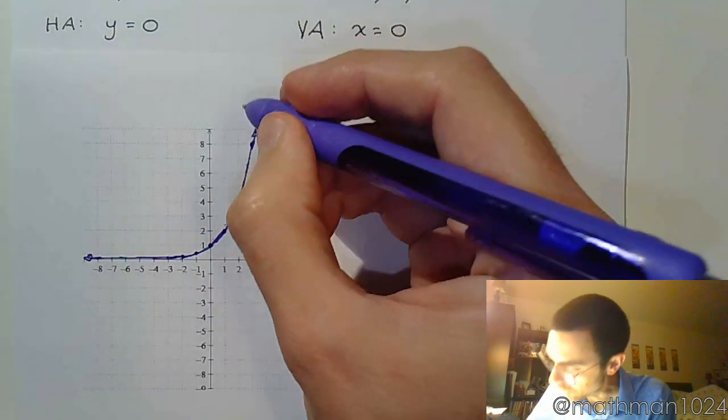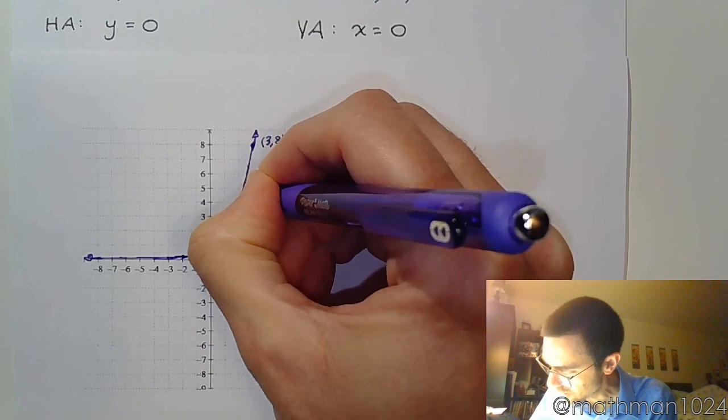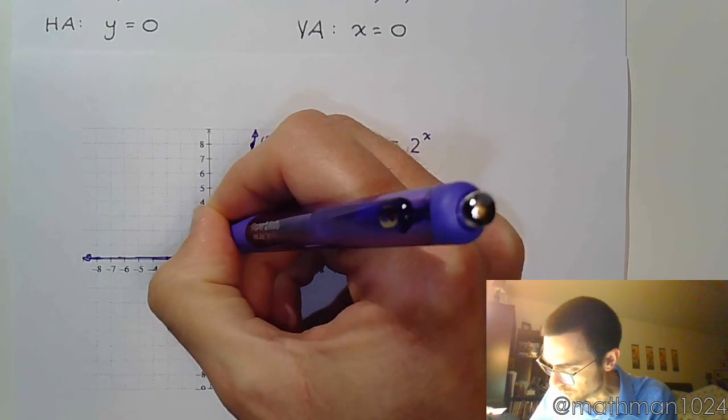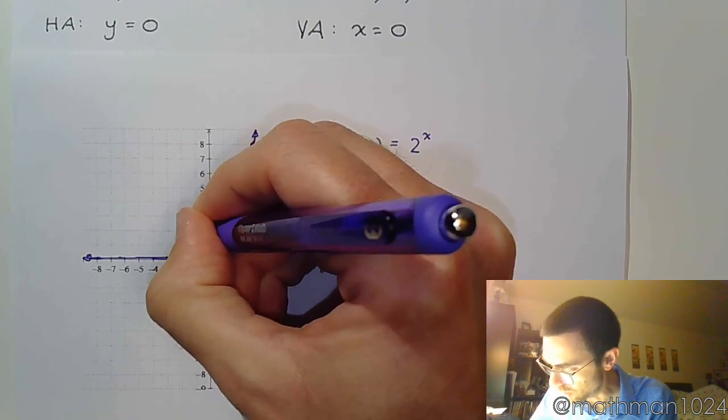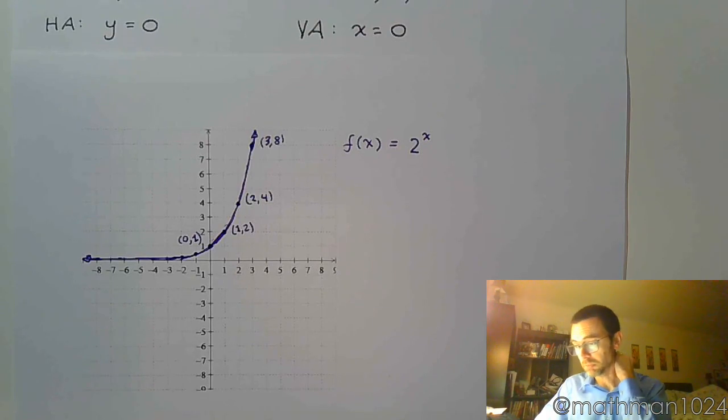Now notice those key points that we had. We have the key point 3, 8, 2, 4, 1, 2, and down here we have 0, 1. If we're going to graph the inverse, the inverse is going to have those coordinates swapped around.